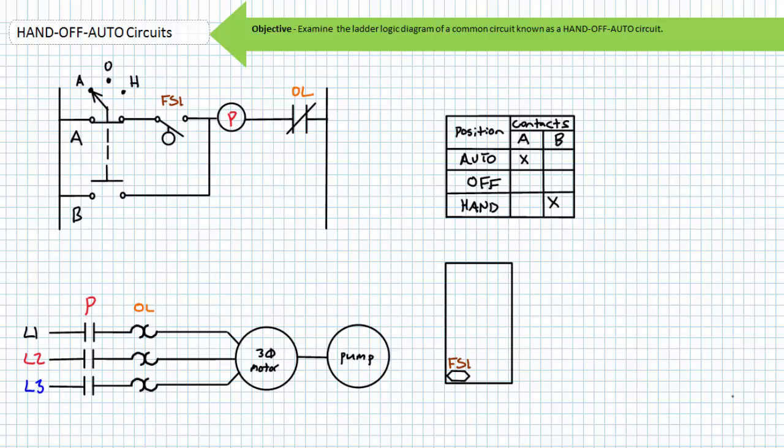Consider this simple sump pumping circuit incorporating a hand-off-auto circuit. The mode selection is provided by a maintained contact three-position selector switch.